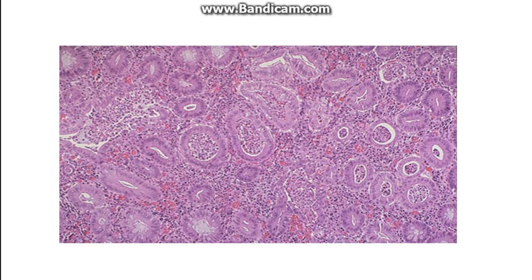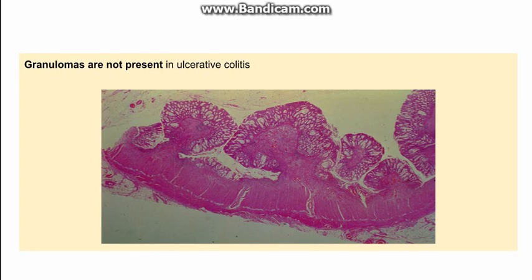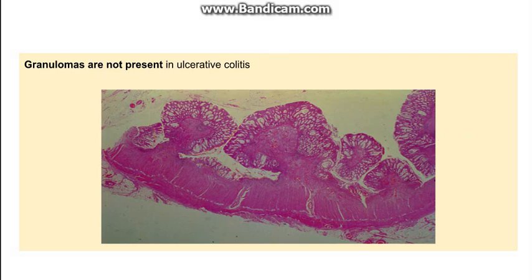Other microscopic features include crypt abscesses — within the crypt there are numerous neutrophils present. There is also absence or loss of goblet cells, which are normally present in the large intestine; in the involved region there is a loss or decrease of goblet cells. Importantly, granulomas — a very characteristic feature of Crohn's disease — are absent in ulcerative colitis. Pseudopolyps can also be seen microscopically: the ulcerated area shows regenerating mucosa forming a polyp-like structure.